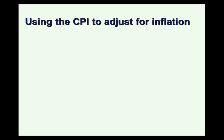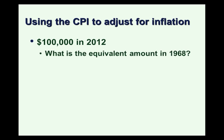We can also use the CPI to adjust nominal quantities — nominal dollar amounts — for the impact of inflation. For example, consider a salary of $100,000 in 2012, which has a certain purchasing power for consumer products. Suppose you want to know what the equivalent amount would be in 1968 — in other words, what salary in 1968 would give us the same buying power as a consumer as $100,000 in 2012?